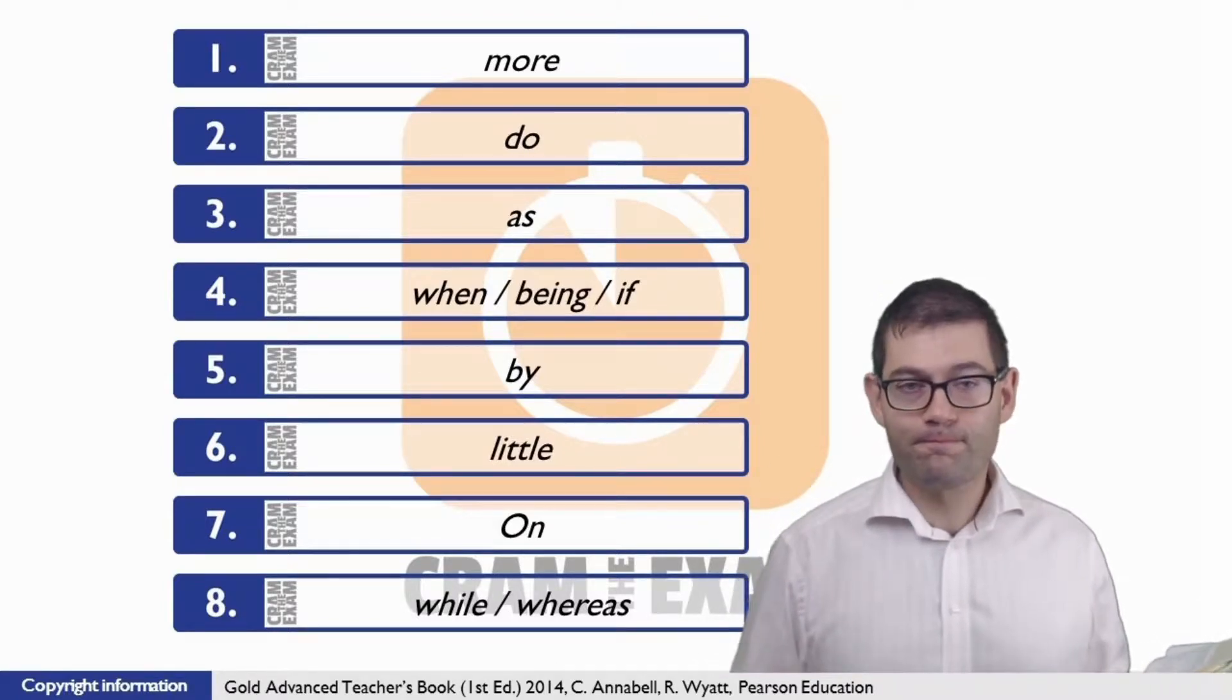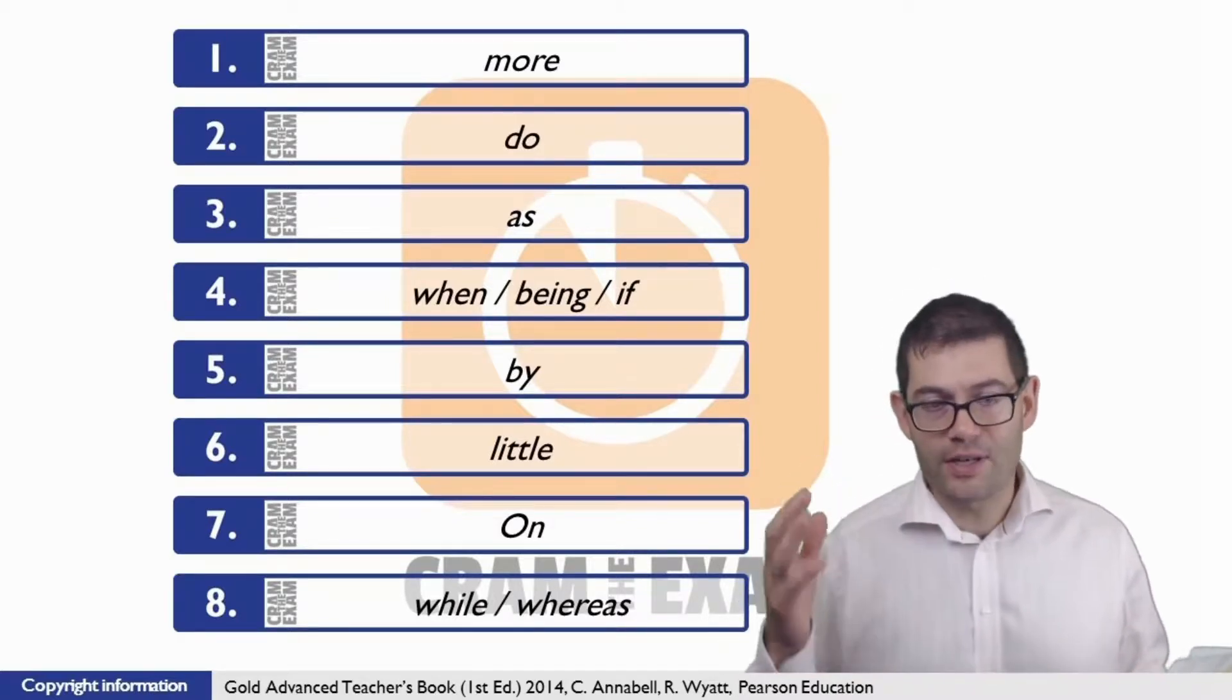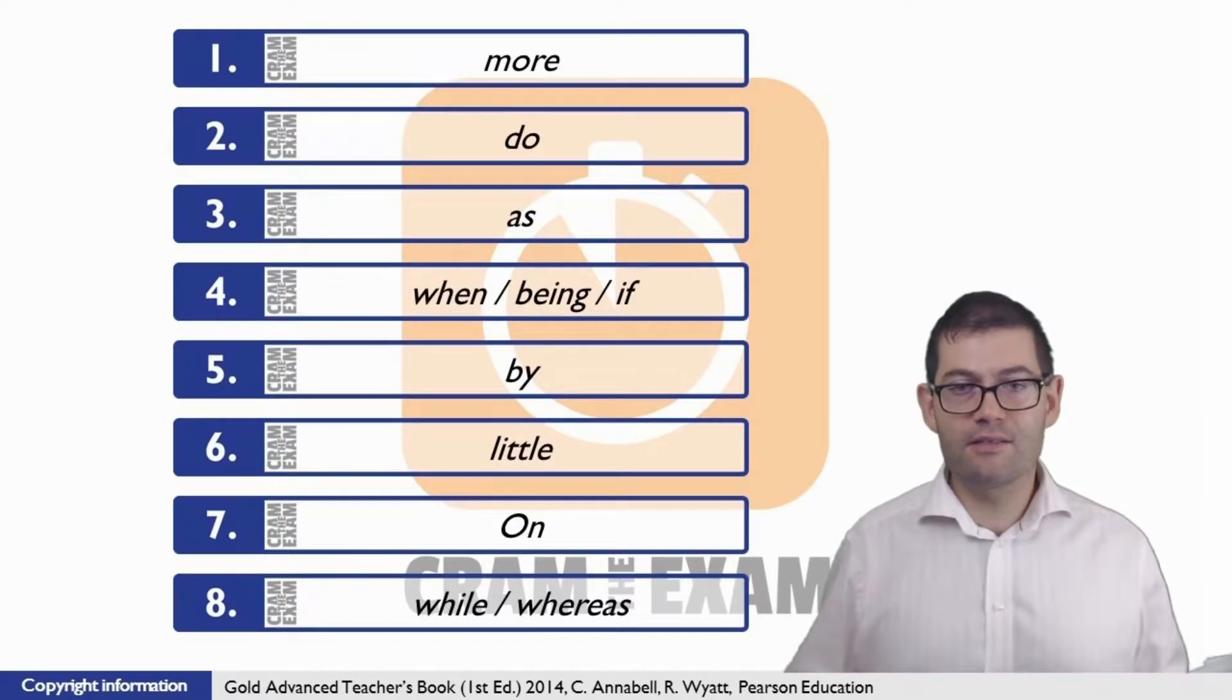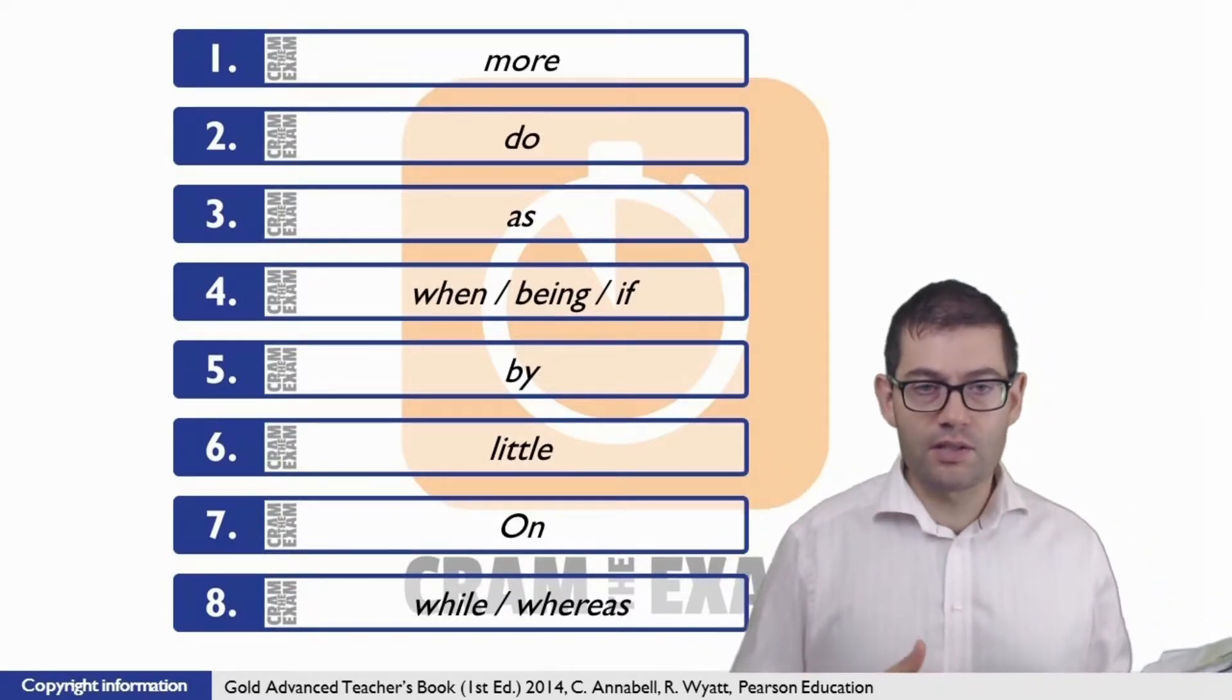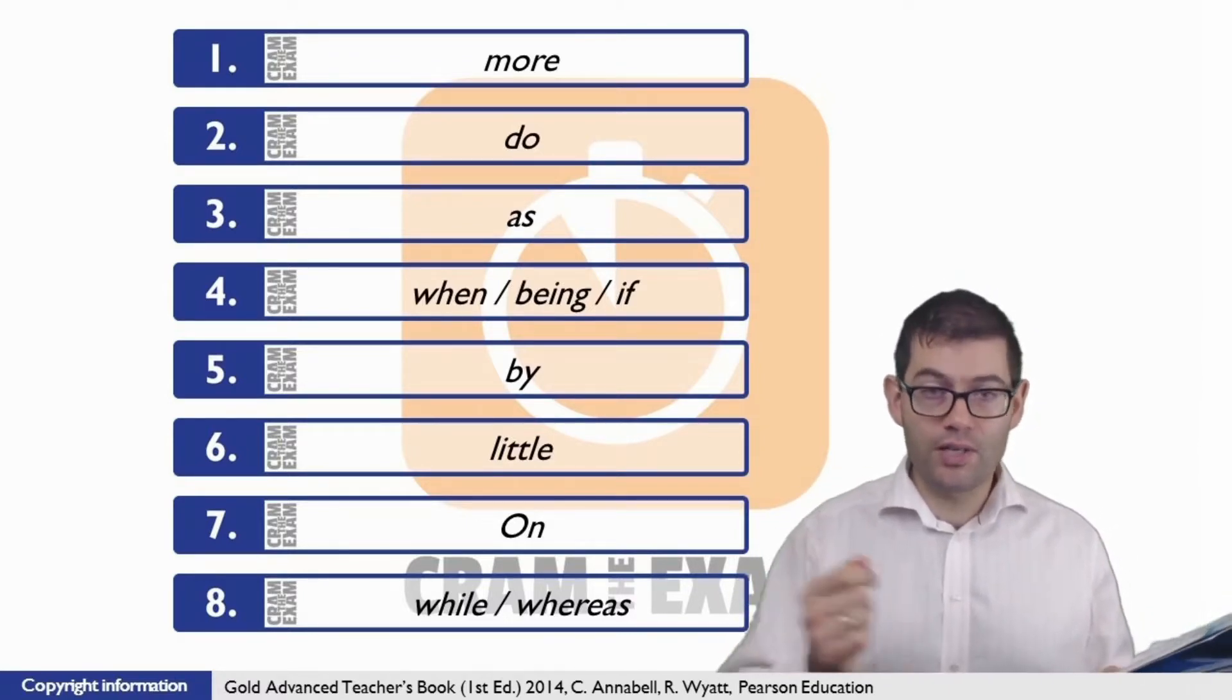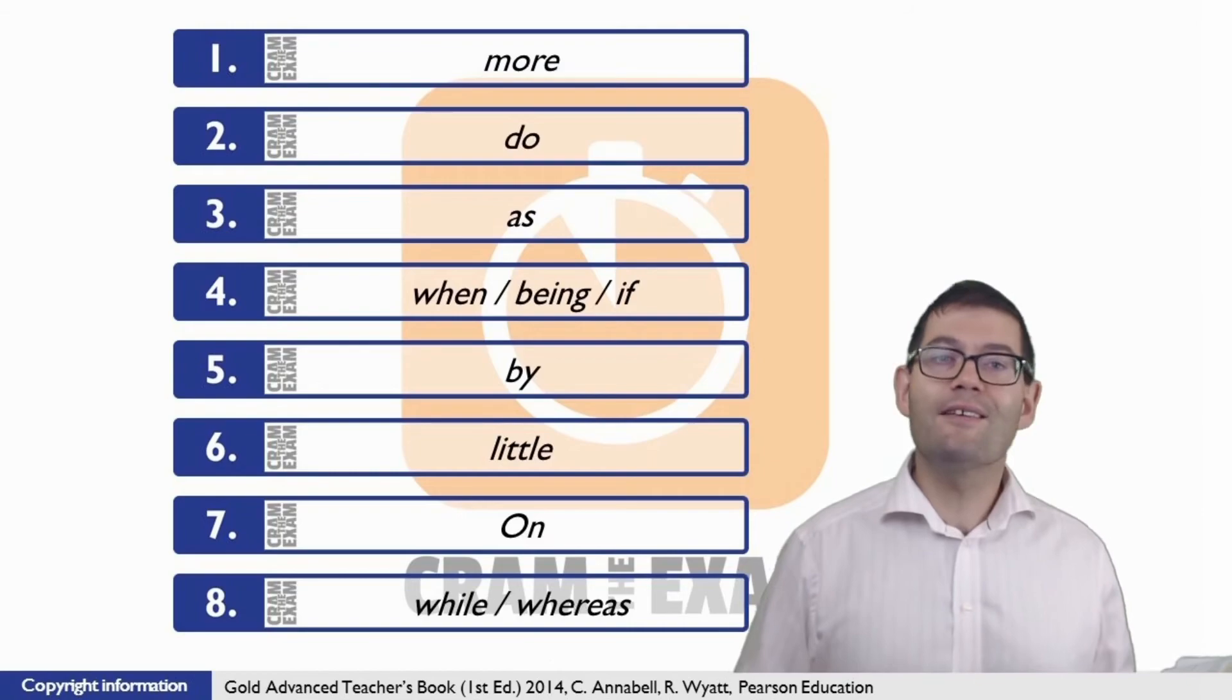Question number eight, here we revisit one of my favorite topics, and that is transitions or discourse markers or linkers, whatever you want to call them. Here we've got a sentence with two parts of that sentence, the two clauses of that sentence, in contradiction, which means that we have to choose a linker which suggests that contradiction. And here in this particular case we've got an option of two - we can either say 'while' or we can say 'whereas'.